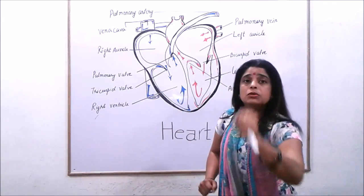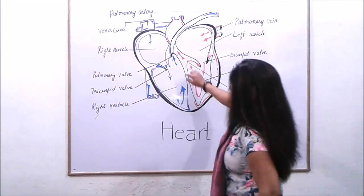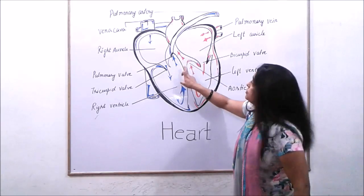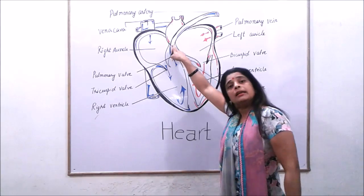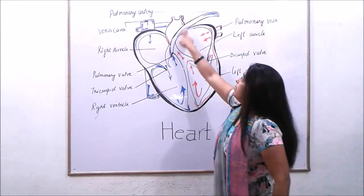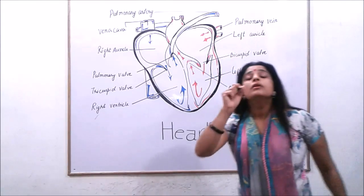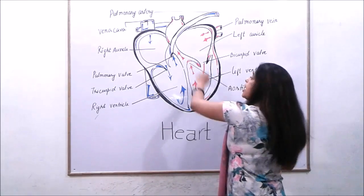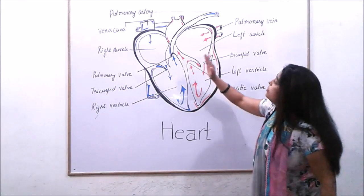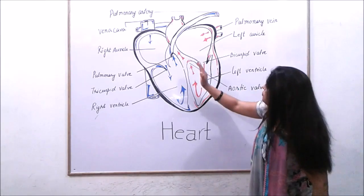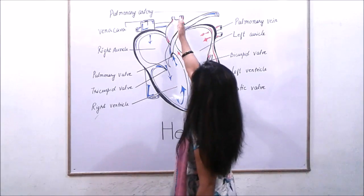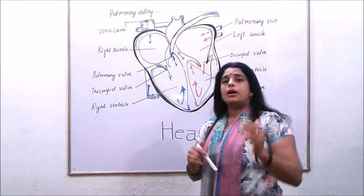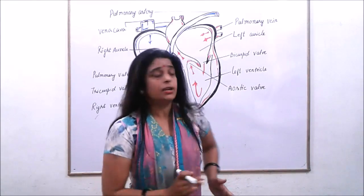Besides them, there are two more valves in our heart. One is the pulmonary valve, which is connected from the ventricle to the pulmonary artery, carrying deoxygenated blood to the lungs. Another valve is known as the aortic valve, which is connected from the left ventricle to the aorta, carrying oxygenated blood from our heart to other body parts.